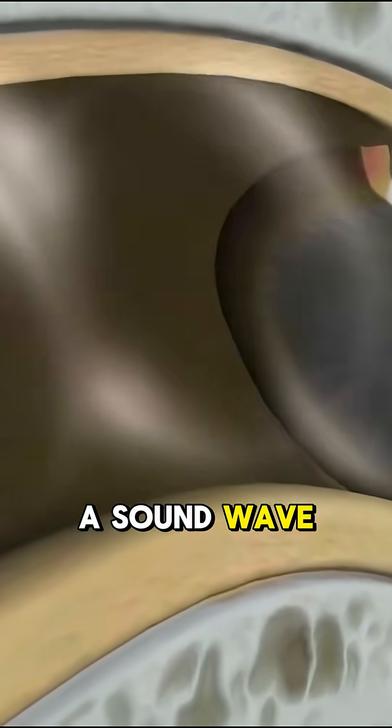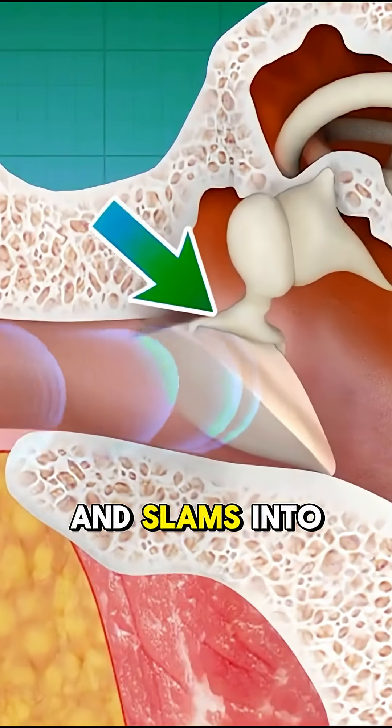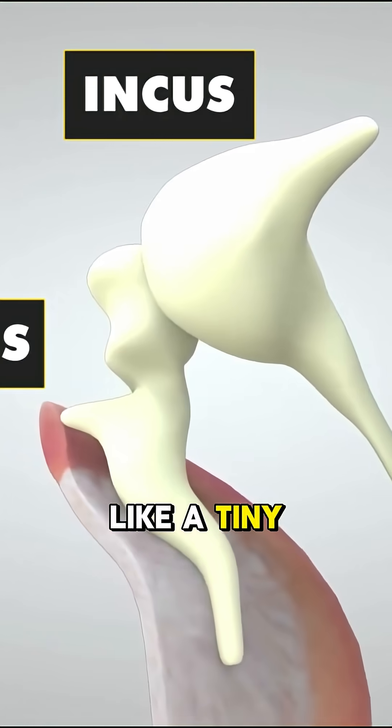When a sound wave hits, it enters through the outer ear and slams into the eardrum, making it vibrate like a tiny speaker.